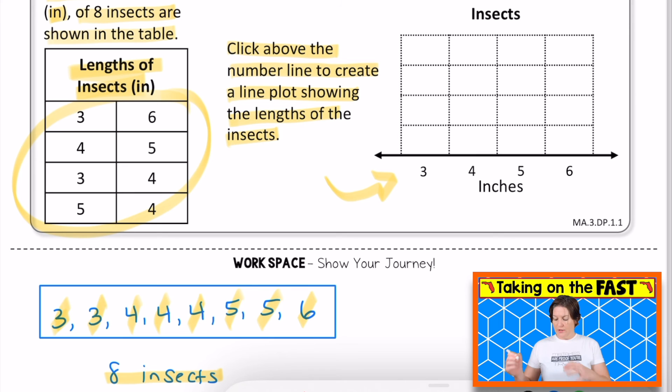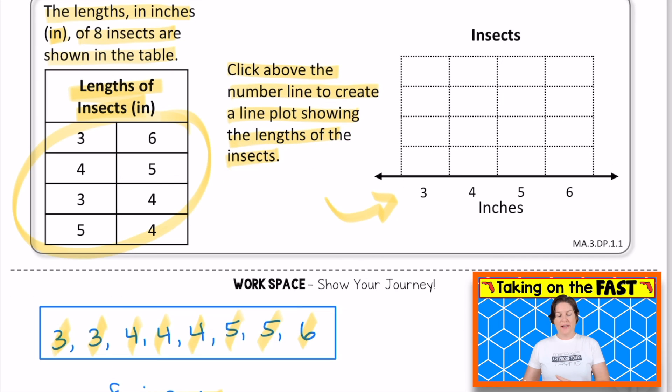So if I were taking this on the computer, click on this line plot up here. In this case though, we're going to pretend like we're clicking and write on it. So maybe when I click it, it makes an X. So right above the three, I need one, two X's above the four.